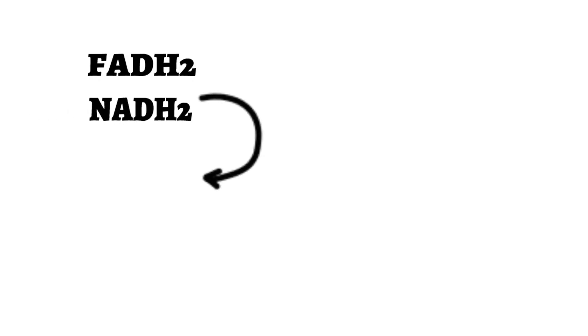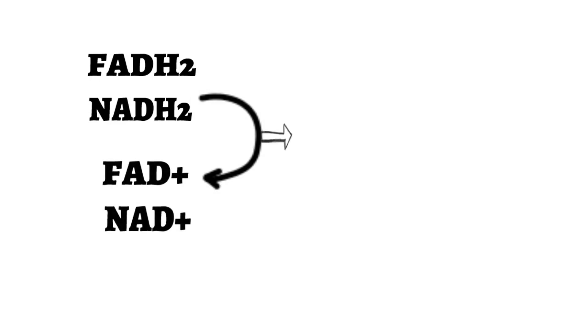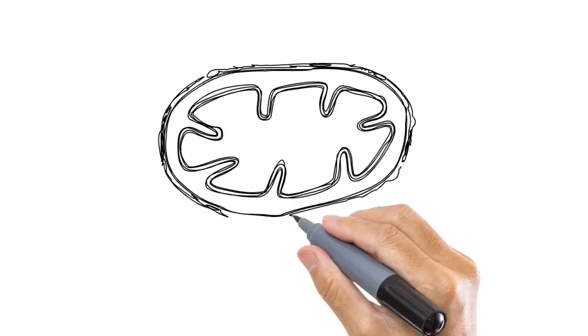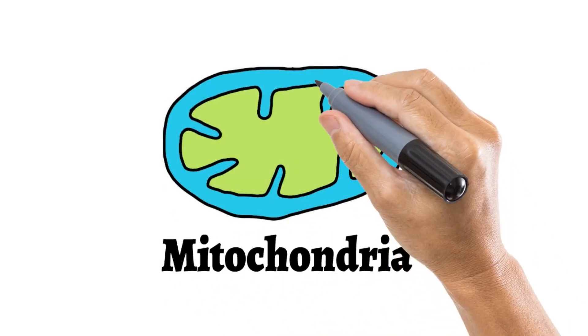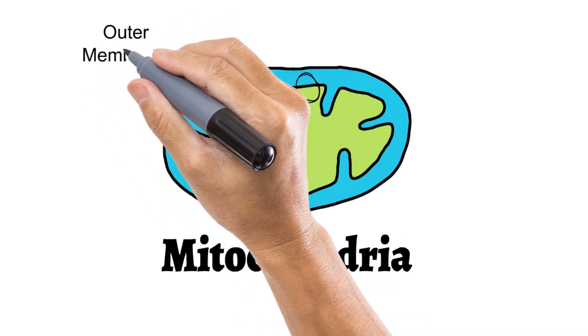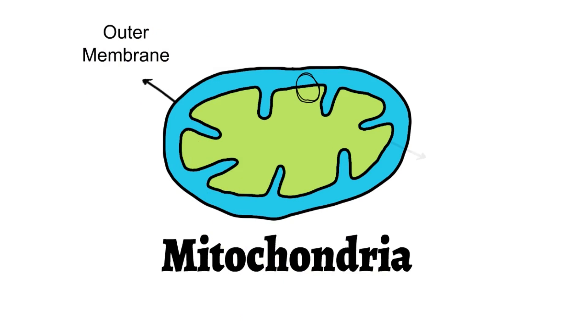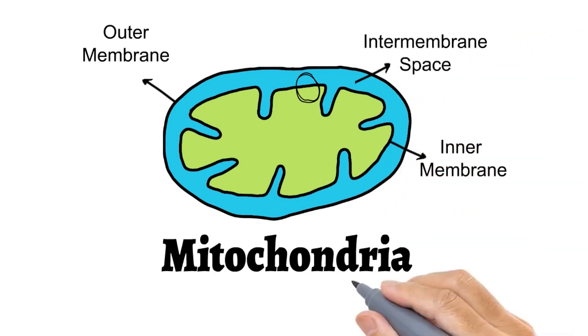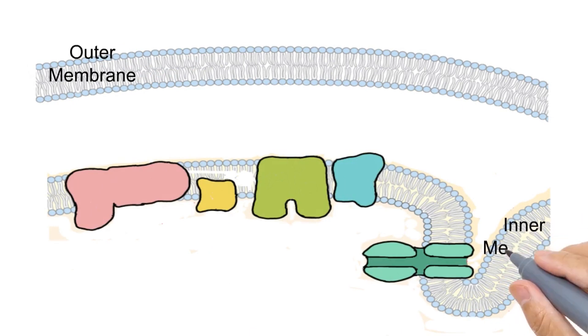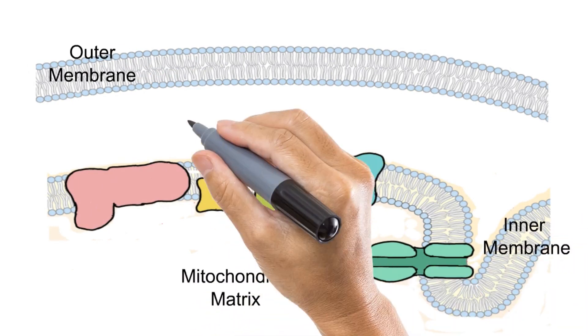The FADH2 and NADH2 molecules are again oxidized back to their original form to produce more energy, and this process occurs in the mitochondria. Oxygen is present near the inner membrane of mitochondria. The mitochondria has an outer membrane, an inner membrane, the space between them called the intermembrane space, and the innermost region called the mitochondrial matrix.